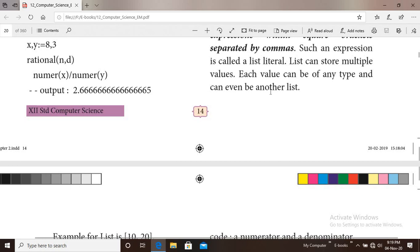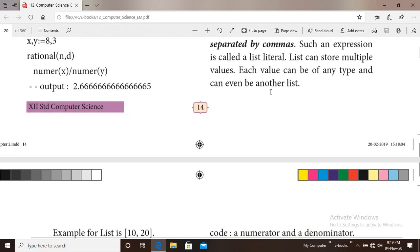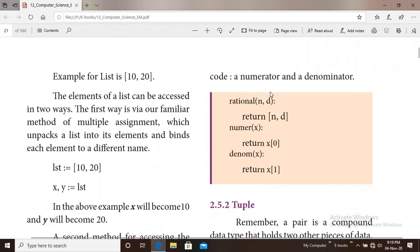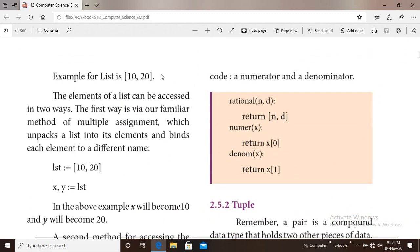List can store multiple values. Each value can be of any type and can even be another list, so list can collect different types of data.